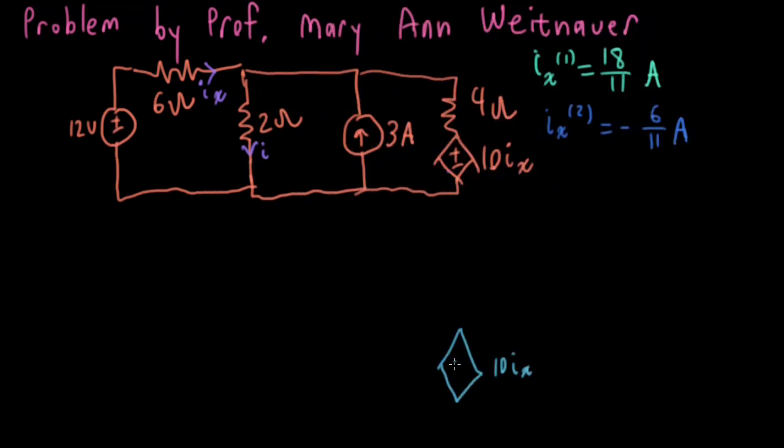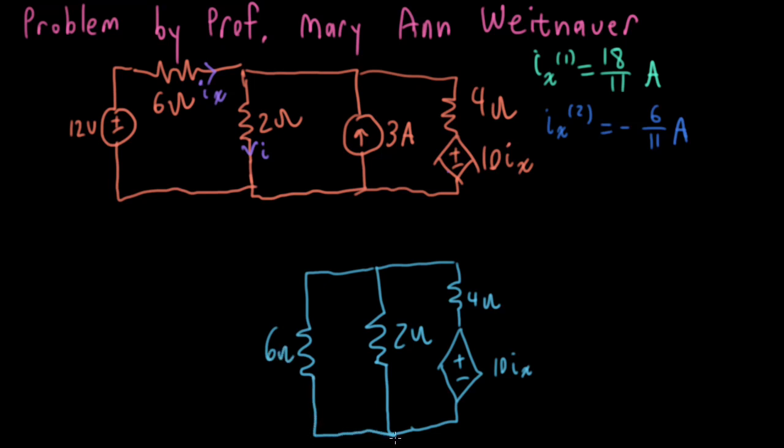Okay, I have my current controlled voltage source that's 10 IX going through a 4 ohm resistor. And then I'll have a 2 ohm resistor here, in parallel with a 6 ohm resistor. My current measurement IX is facing to the right like this. So I think what I'm going to do here is I'll figure out what the current coming out of the positive terminal of the voltage source is. And then we'll use a current divider to figure out what IX is.